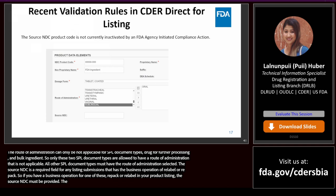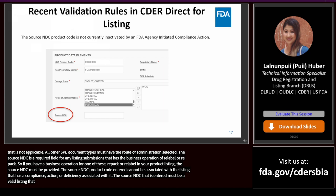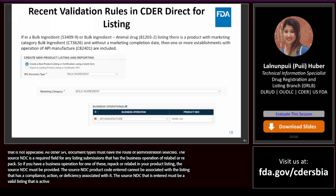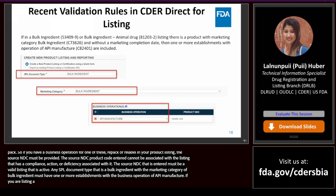The source NDC product code entered cannot be associated with a listing that has a compliance action or deficiency. The source NDC that is entered must be a valid, active listing. Any SPL document type that is a bulk ingredient with the marketing category of bulk ingredient must have one or more establishments with the business operation of API manufacturer. If you are listing a bulk ingredient, it will not pass validation unless you enter the API manufacturer's information.